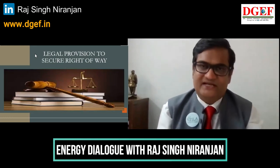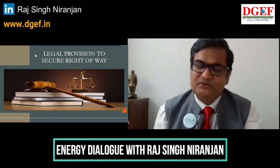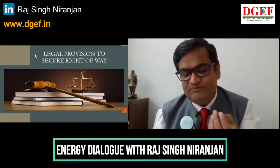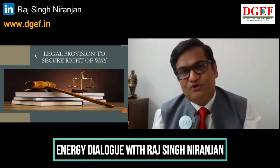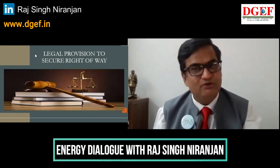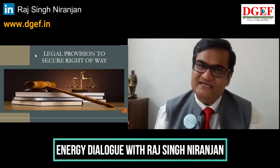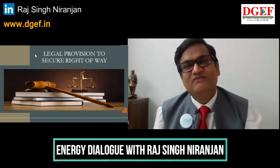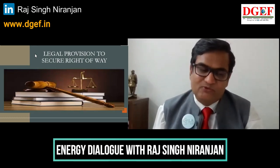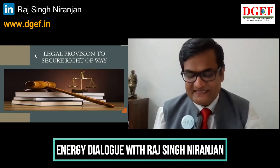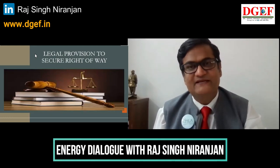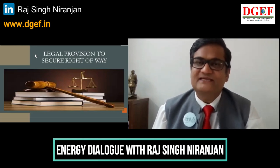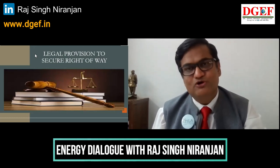To recap: to pre-empt and mitigate risk of disruption, we must ensure the safety of field personnel and their ability to access, enter and work in privately owned properties. We have also discussed the CEA Measures Relating to Safety and Electrical Supply Regulation 2010, and the Ministry of Environment and Forest guidelines, which specify the mandatory minimum electrical clearance and the required ROW corridor width.